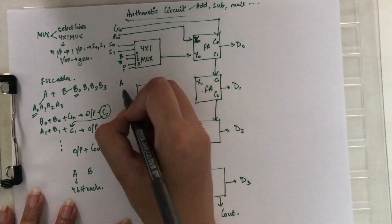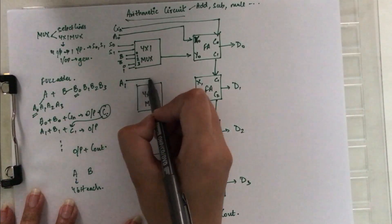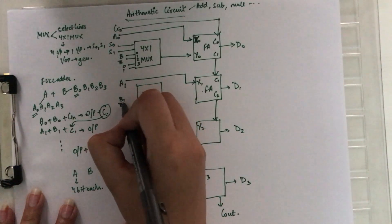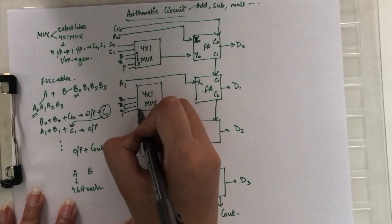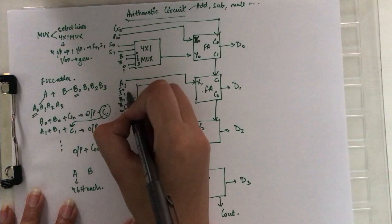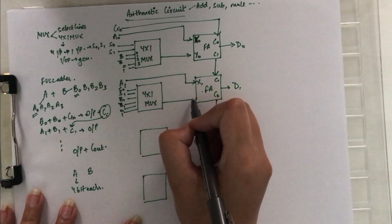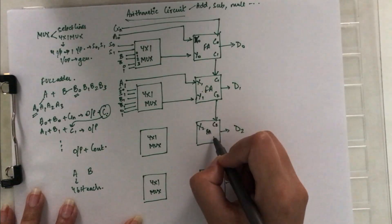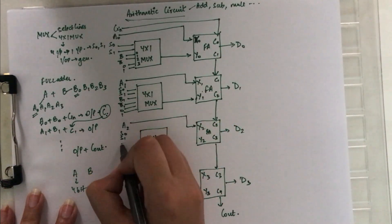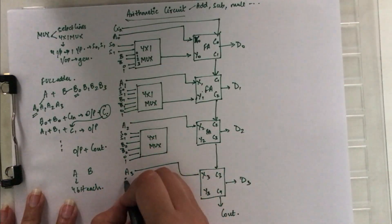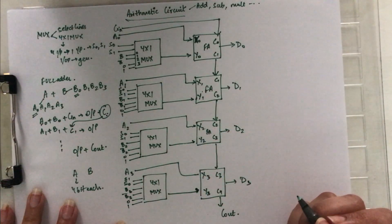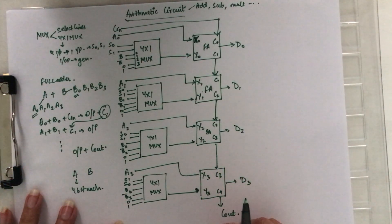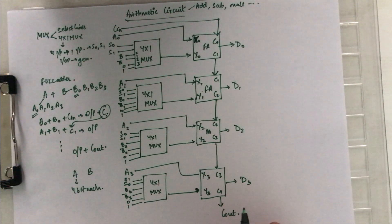Similarly, for the next mux, A1 — the second bit of the first operand — enters the X input of the full adder directly, whereas B1, B1-complement, zero, or one are the four inputs for the second mux, plus the select lines which select one of these four, entering the Y input of the full adder. This is the final diagram for the arithmetic circuit.